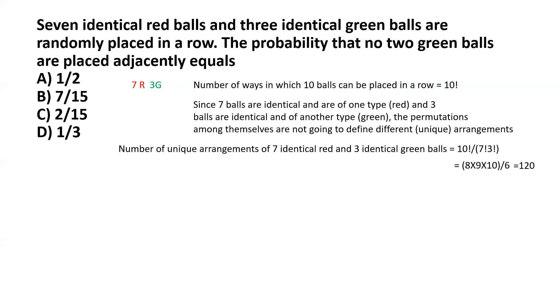This is going to be the denominator in the probability. Now we have to consider the case where the arrangements are such that no two green balls are placed side by side. Adjacently basically means they're not placed side by side. For that, the green balls would have to occupy places between the red balls.